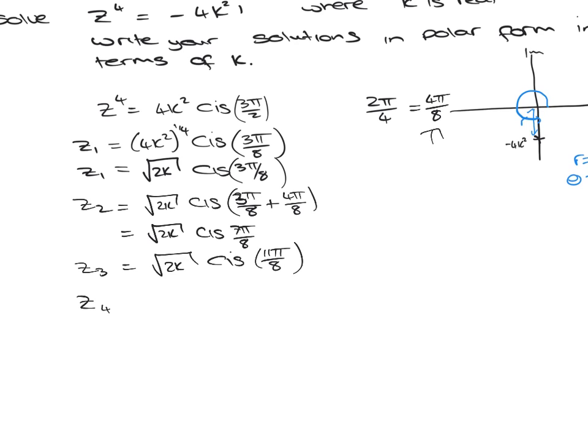And finally the fourth root, because the power is z to the 4, we know there's 4 roots. Modulus stays the same, cis. And now we've got 11 pi over 8 plus 4 pi over 8 becomes 15 pi over 8. And there are our 4 solutions.